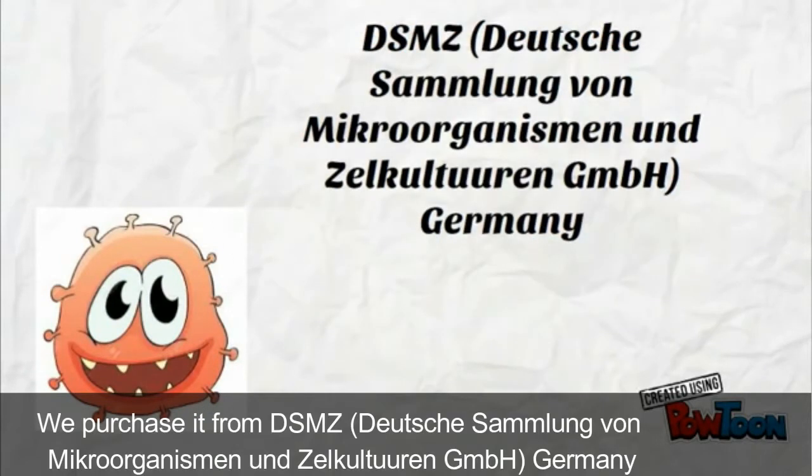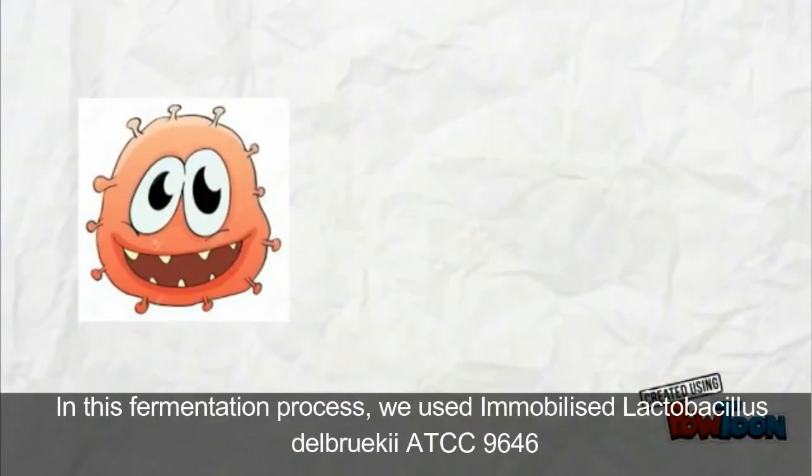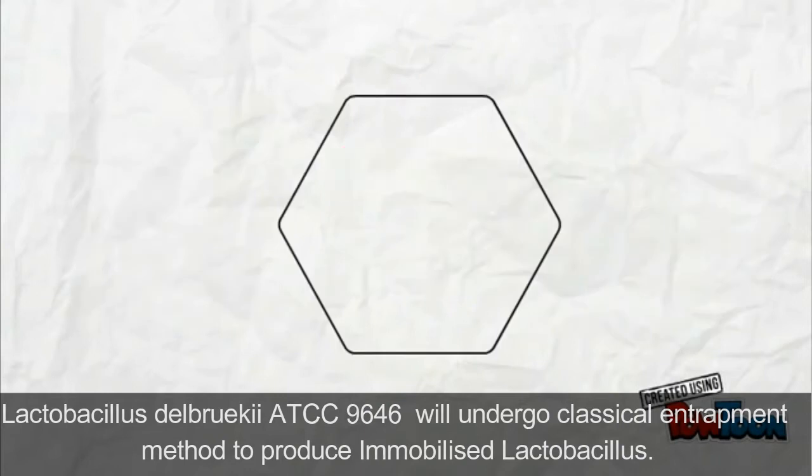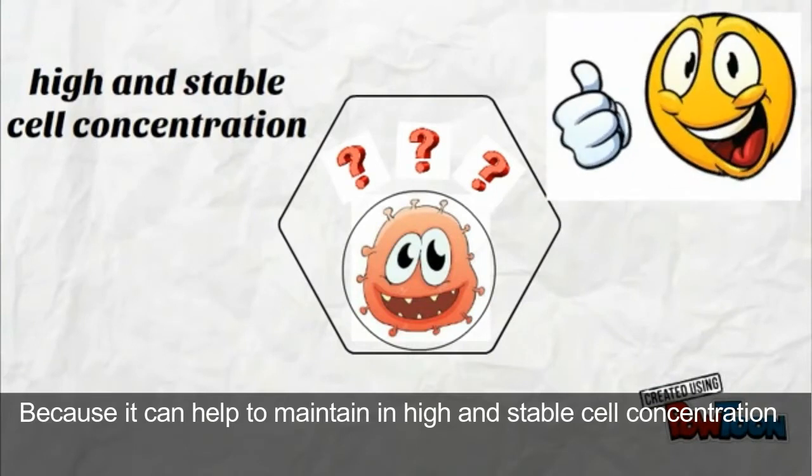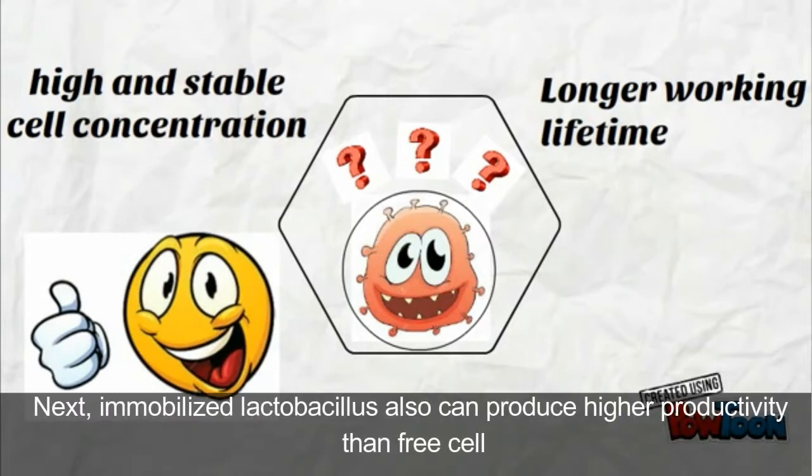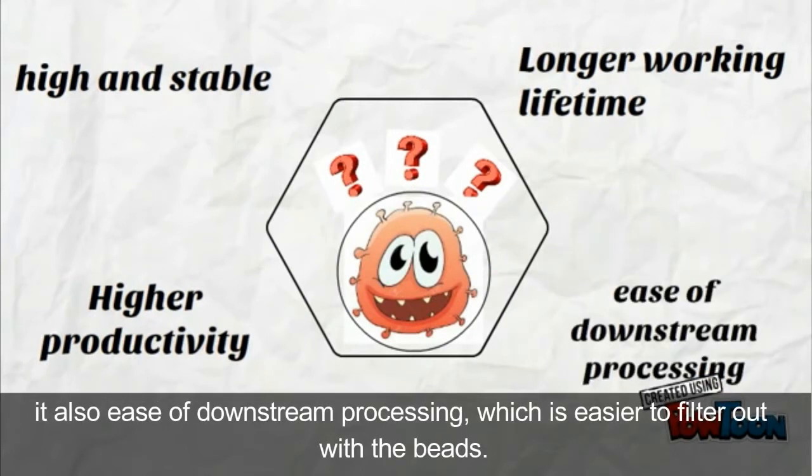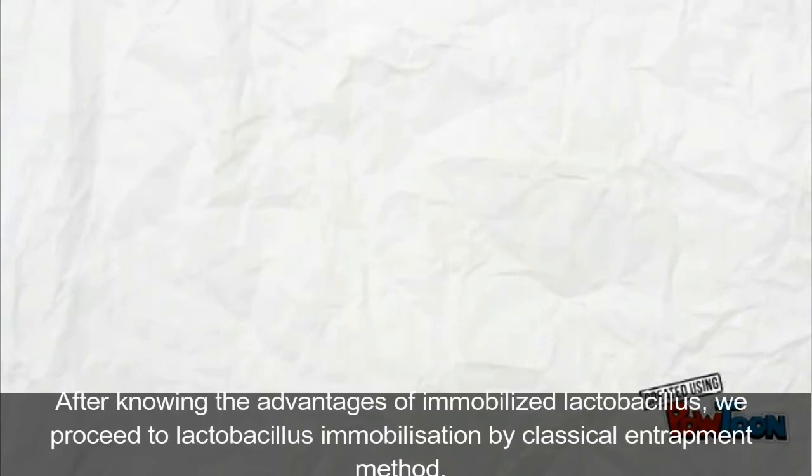We purchase it from DSMZ Germany. In this fermentation process, we use immobilized Lactobacillus. Lactobacillus will undergo classical entrapment method to produce immobilized Lactobacillus. Why we use immobilized Lactobacillus? Because it can help to maintain high and stable cell concentration. Besides, it has longer working lifetime than free cell system. It can retain for 20 days before undergoing death phase. Next, immobilized Lactobacillus also can produce higher productivity than free cell. It also eases downstream processing, which is easier to filter out with the beads.